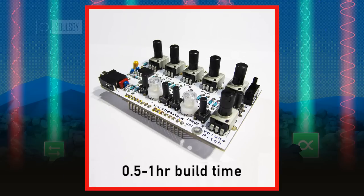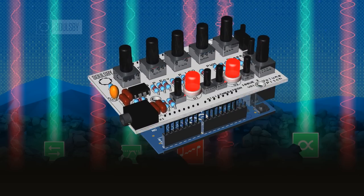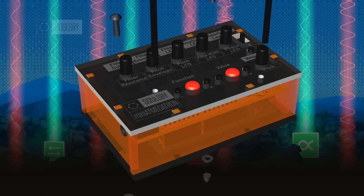It takes half an hour to an hour to solder depending on your soldering ability. It is recommended that you have some previous soldering experience. The shield is then inserted into the Arduino Uno and the enclosure assembled around it.